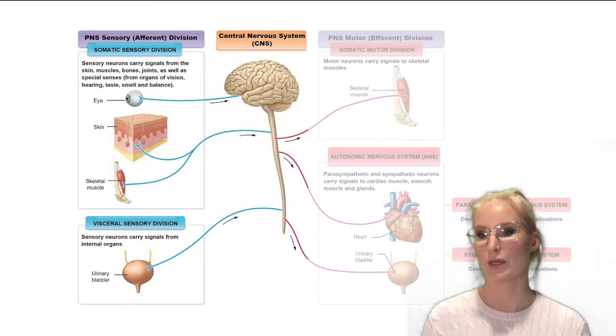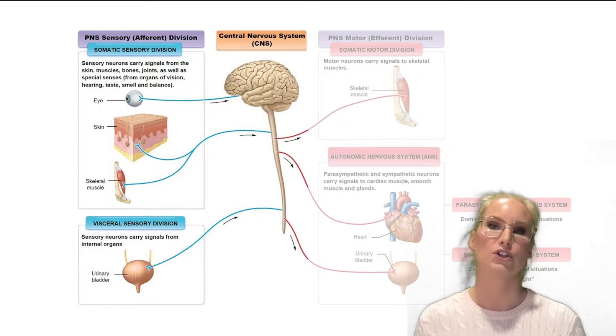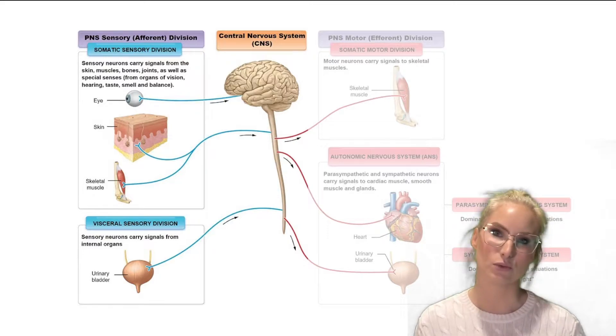Now the somatic sensory division is taking information from the rest of our body. So our skin, our muscles, our eyes and our joints and so forth.